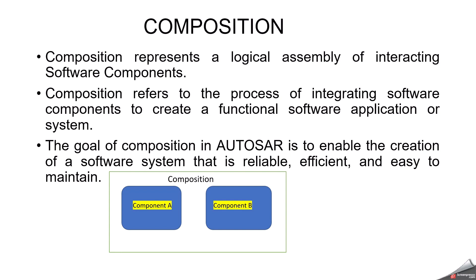As you can see in this slide, the composition has multiple software components — Component A and Component B. The goal of composition in AUTOSAR is to enable the creation of a software system that is reliable, efficient, and easy to maintain.